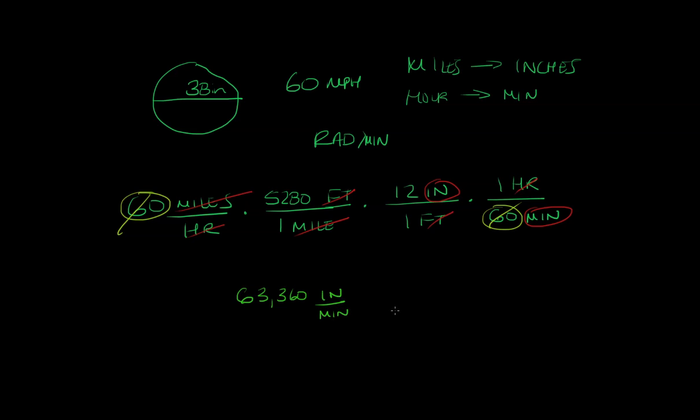Now from here, we want to find the angular speed, because right now this is just the linear speed. So the angular speed, we'll call it omega, will be our linear speed that we found, divided by the radius, which the diameter is 38. The radius is half of that. So that's going to be 19. And that's going to be in radians per minute.